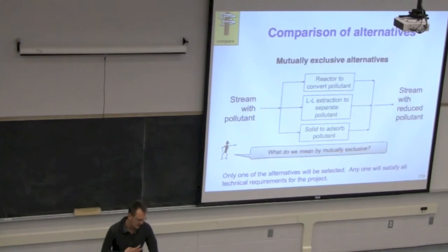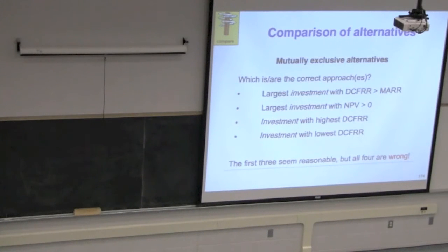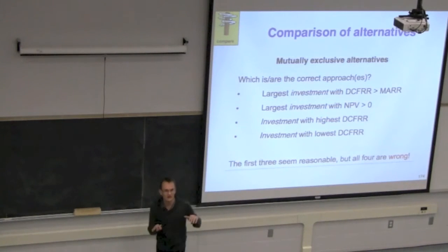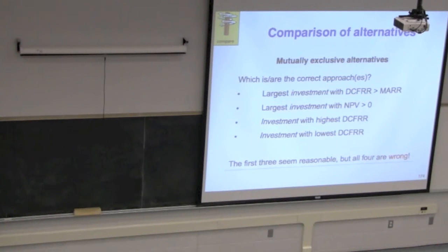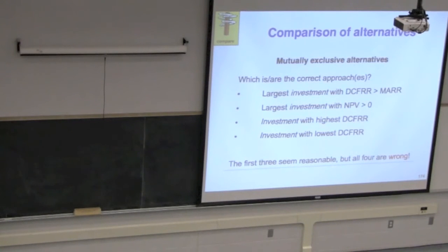Given those conditions, how should we choose which project to pick? We can rule out picking the project with the lowest DCFRR — that's clear. Should we pick the project with the highest NPV? Picking the project with the greatest NPV means picking the greatest profit if NPV is the metric. That's one valid approach. What about picking the project with the largest rate of return, DCFRR?